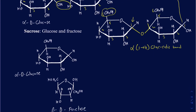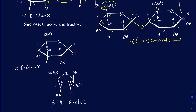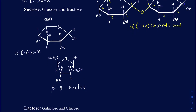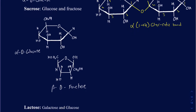Let's take another example. Sucrose is another common one. Sucrose is a combination of glucose and fructose, and it's a little bit interesting when we talk about sucrose because it's going to be the anomeric carbons that are going to be bonding with one another.